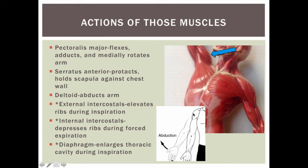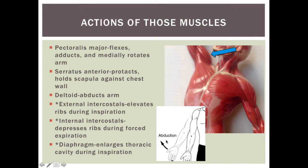Now some actions of those muscles. The pectoralis major flexes and adducts and medially rotates the arm. Adduction is to move towards the midline of the body. The serratus anterior protracts and holds the scapula against the chest wall. The deltoid abducts the arm, which is to move away from the midline, as seen here in this picture.